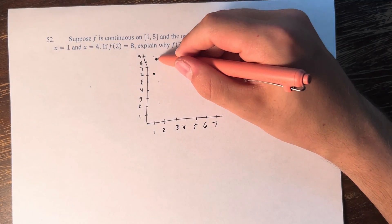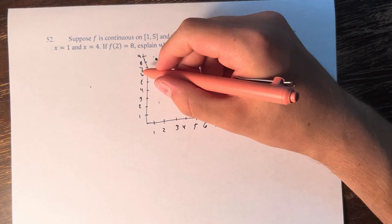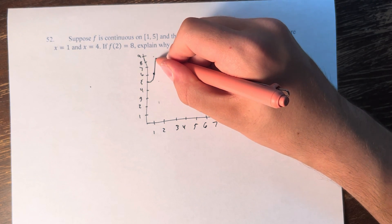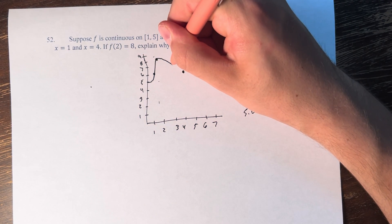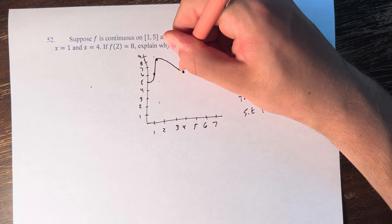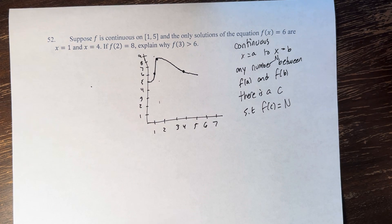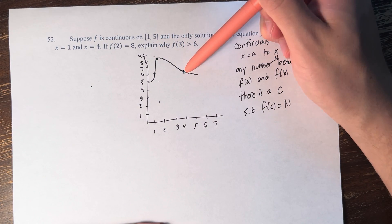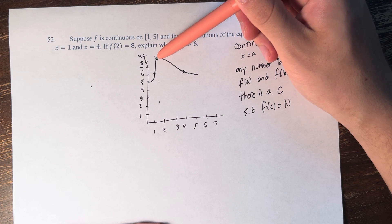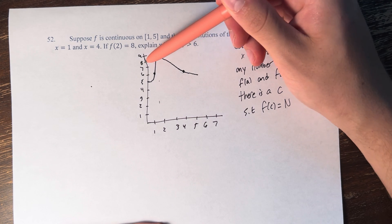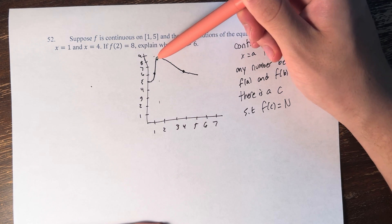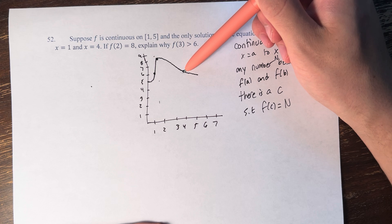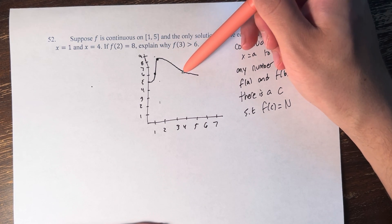So what does that mean? Any value you pick in this range, between this point and this point, at some point the function is going to hit that value. If this function is continuous and it goes up, hits that point, and then goes back down — if you're going from here to here and you want to hit 7, you can't get there while avoiding 7; you have to hit it at some point on the way.